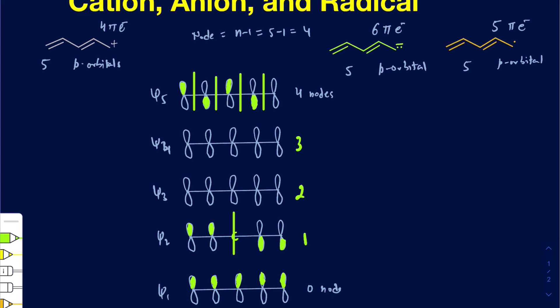For two nodes in ψ3, an important trick is that wherever the nodes are going to be, they should be at an equal distance from the center. The best way to get two nodes is to take out this carbon atom and create a node there, and take out this carbon atom and create a node here. So I take those out, and I have one oriented to the top, then on the bottom, then on the top — giving a total of two nodes.